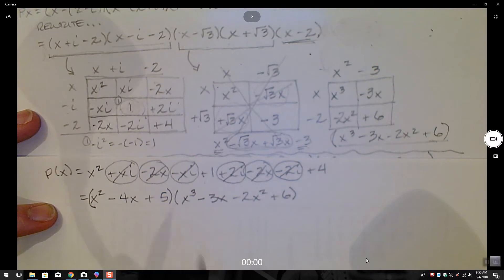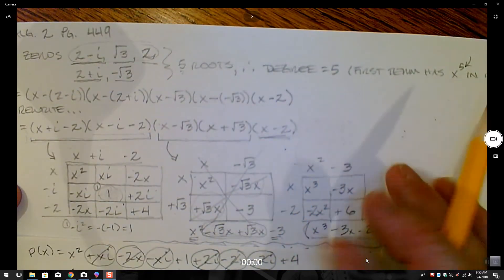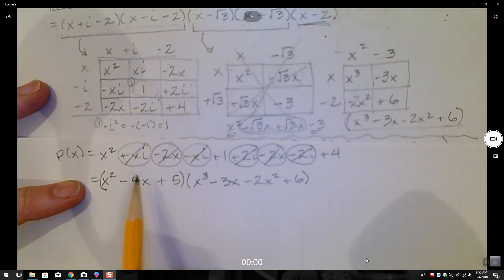We know we're on a good path, because I know when we combine these two terms, I'm going to have an x to the fifth, which is exactly what I want. Let's do it.